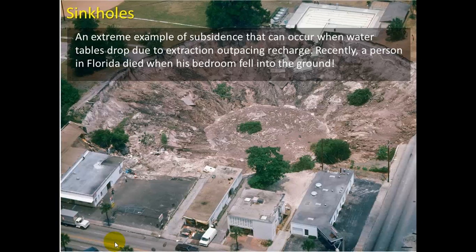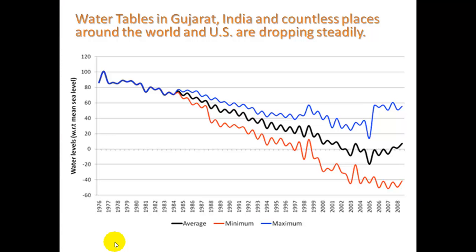Sinkholes are an extreme example of subsidence that can occur when water tables drop due to extraction outpacing recharge. Recently, a person in Florida died when his bedroom fell into the ground. Looking at Gujarat, India, from 1983 onward, the groundwater has dropped significantly.